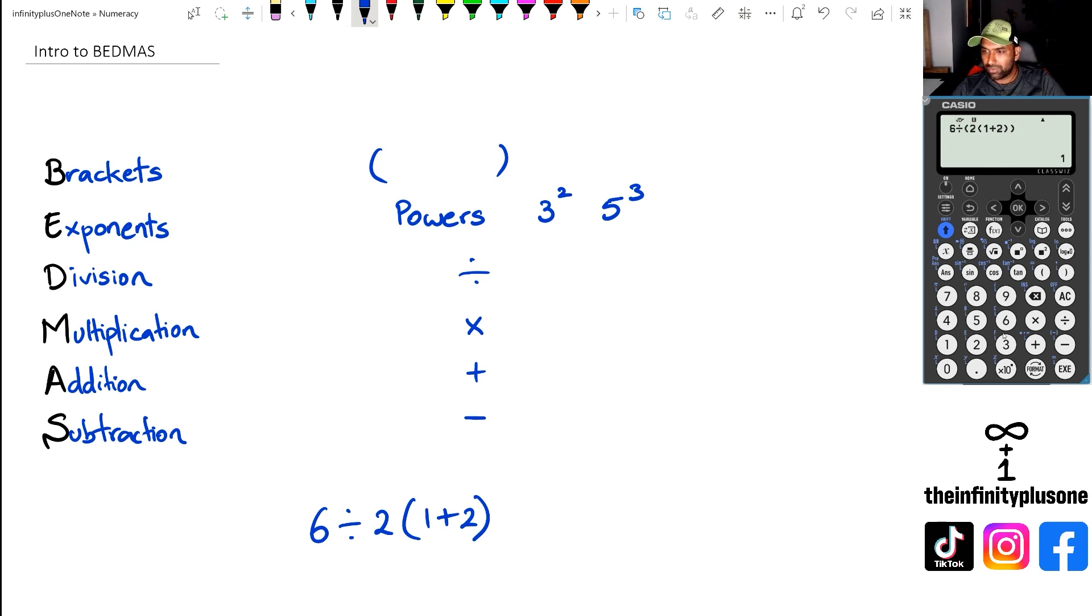But however, check this out. If I was to do 6÷2, and instead of putting the bracket, I put a multiplication sign in there, and then I go 1+2. And in this case, I actually get 9, because what's happening is it's doing 6÷2 as separate, which is going to be 3, the 1+2 is inside a bracket, which is 3, 3×3 is 9.